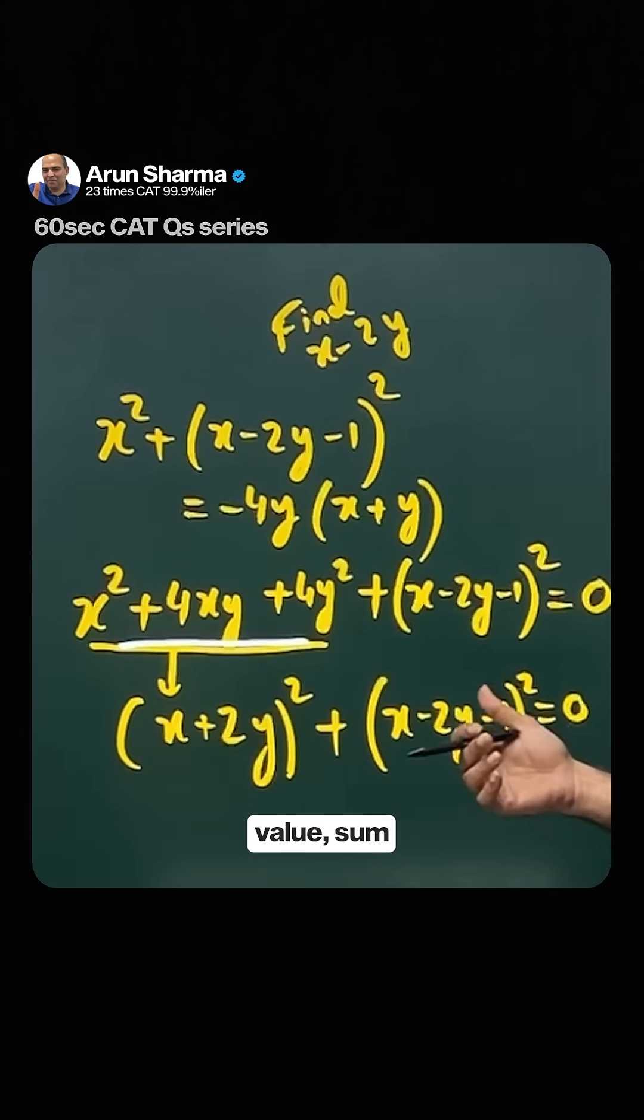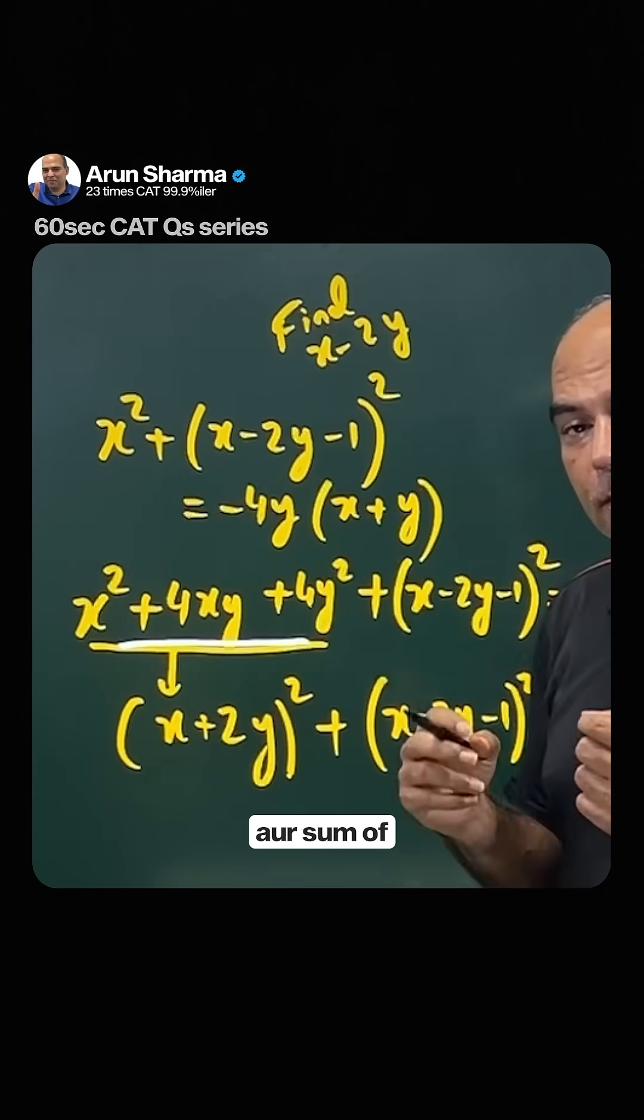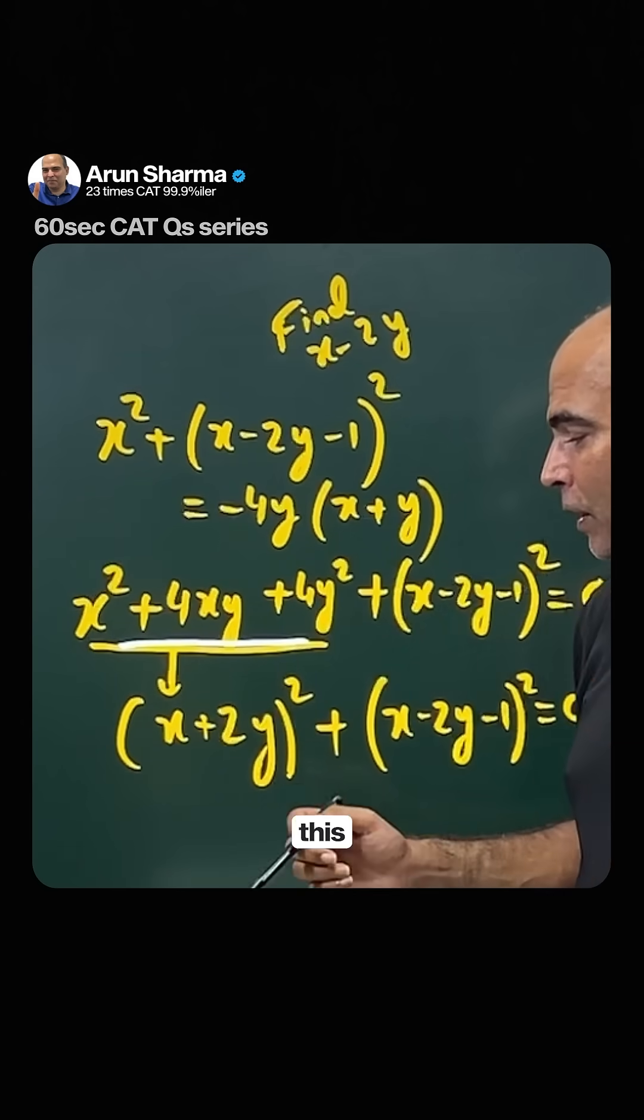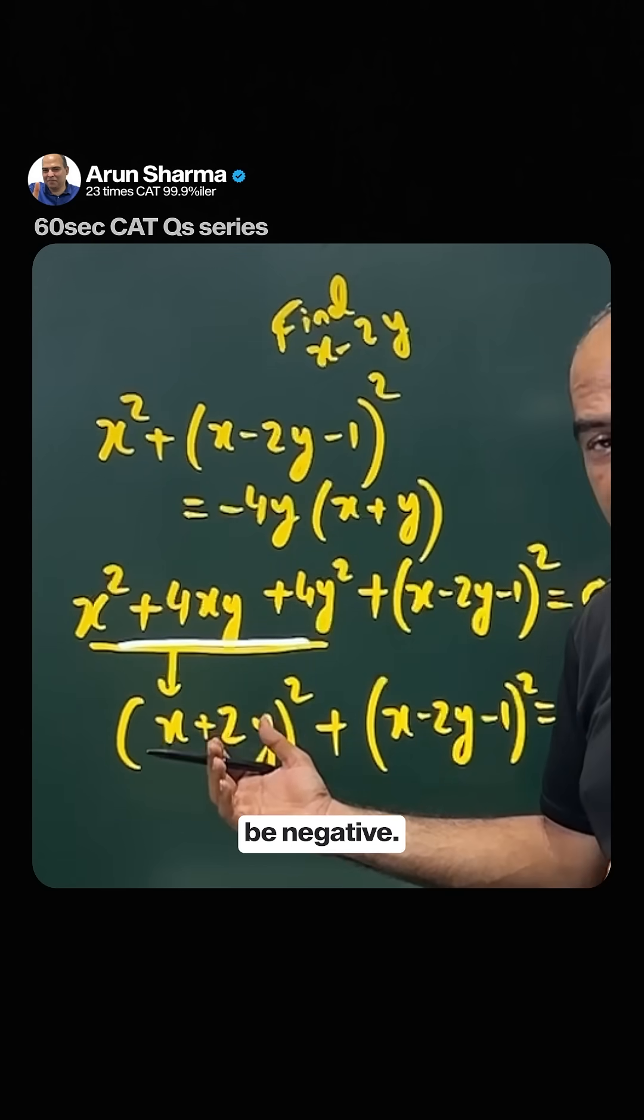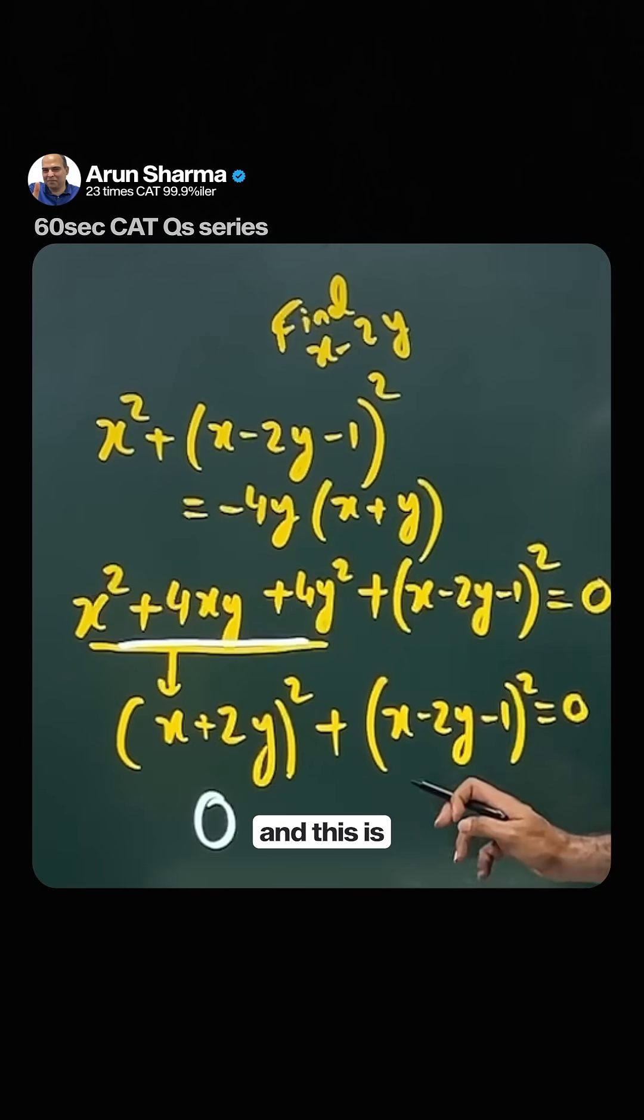The situation is that the sum of two squares is 0. If the sum of two squares is 0, it means this can only happen because a square can never be negative. It can only happen if this is 0 and this is 0.